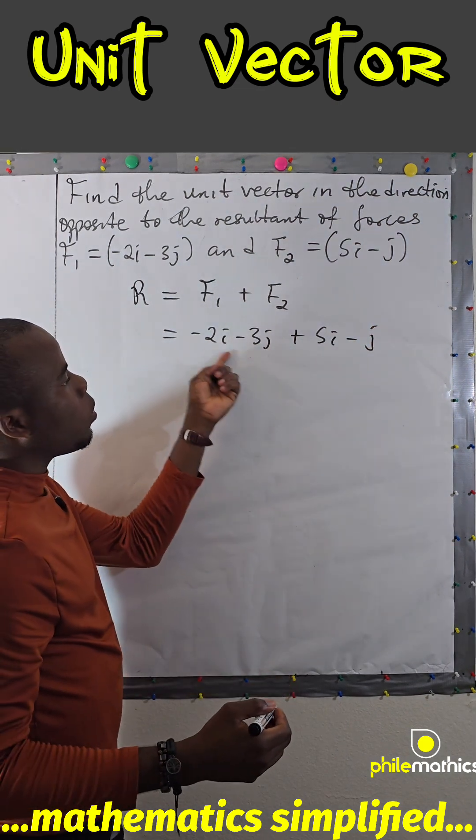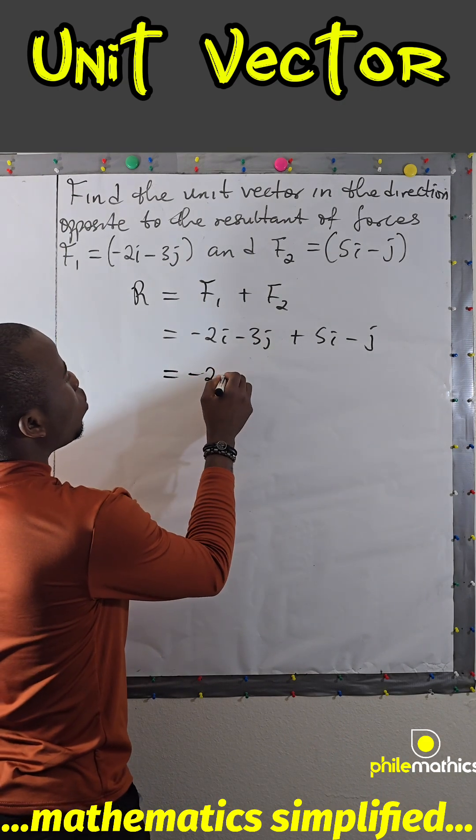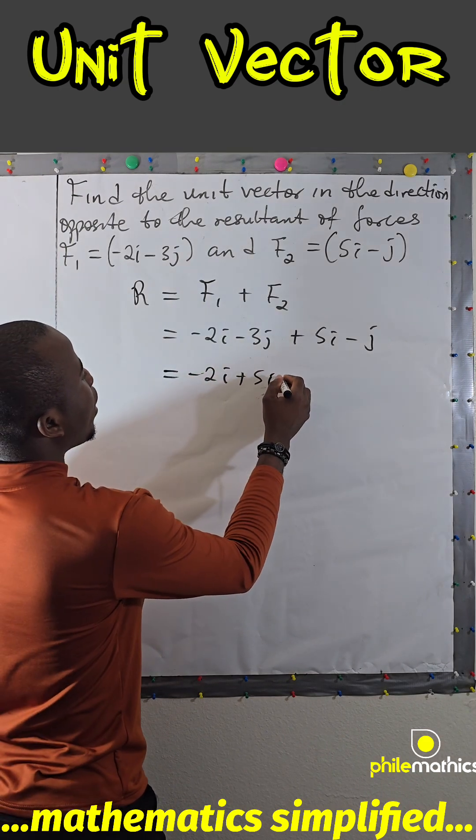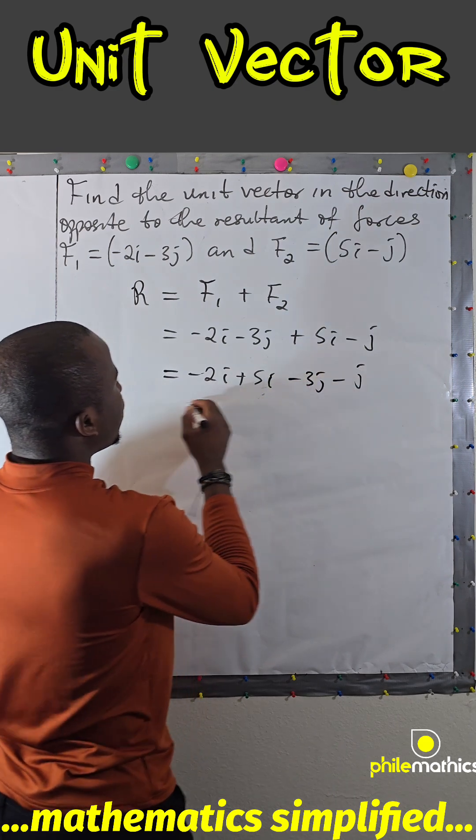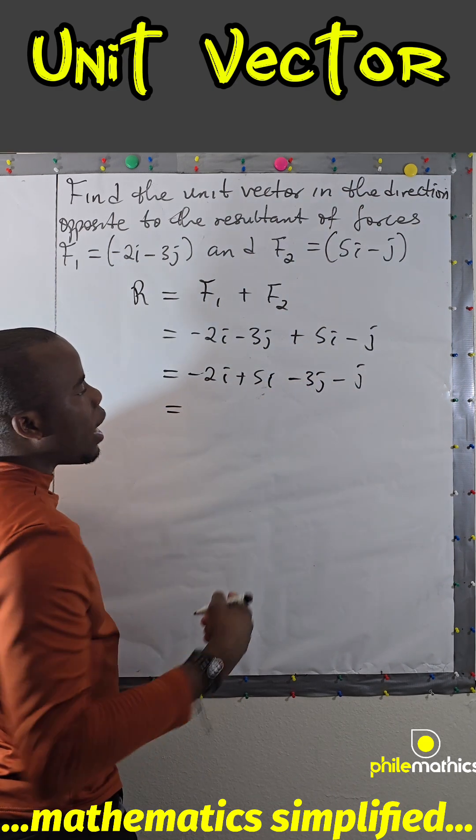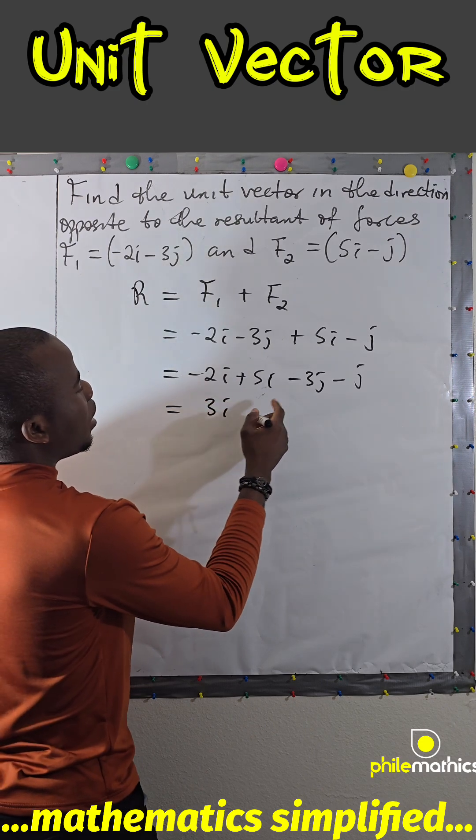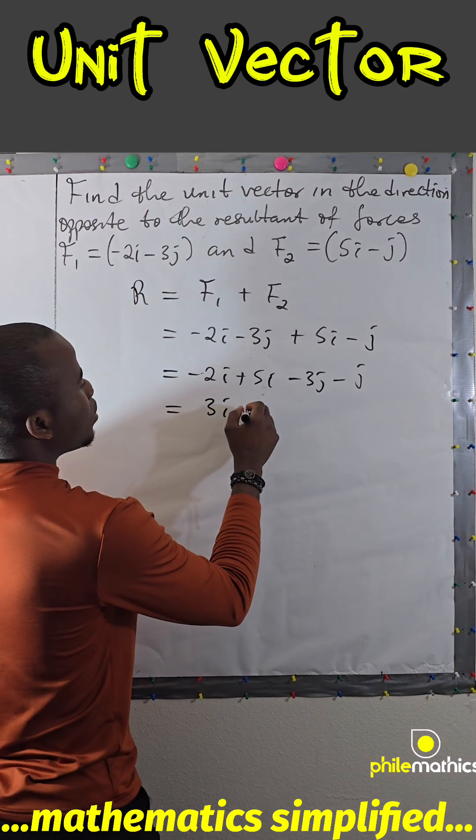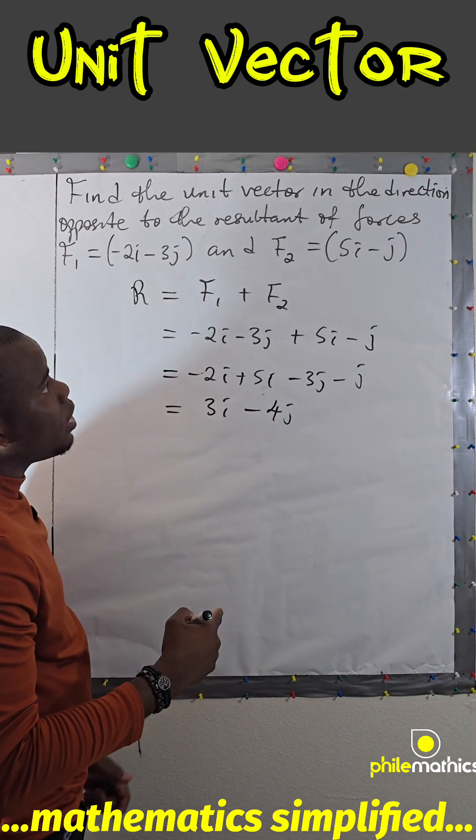We add vectors by adding the corresponding units, so this would be -2i + 5i - 3j - j. And so -2i + 5i is 3i and -3j - j is -4j.